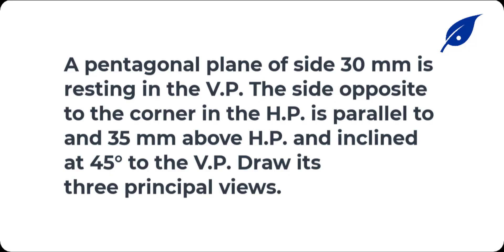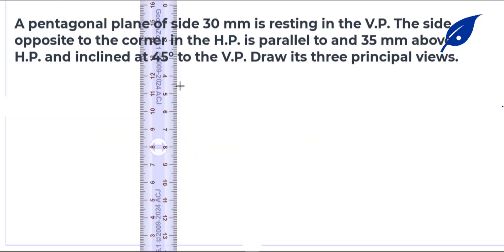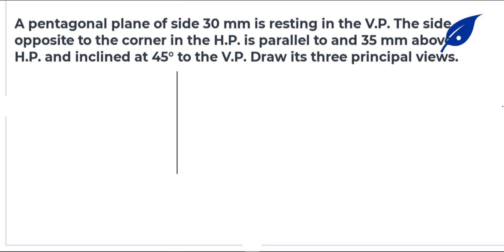Welcome to this lesson. In this video, we consider a pentagonal plane of side 30 millimeters resting in the vertical plane. The side opposite to the corner in the horizontal plane is parallel to and above the horizontal plane, and inclined at 45 degrees to the vertical plane. We will draw its three principal views.